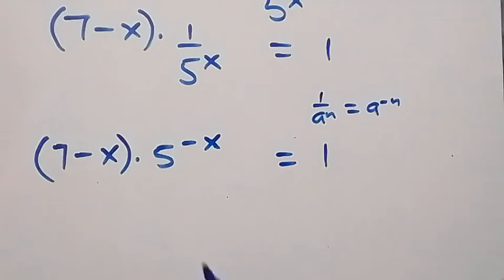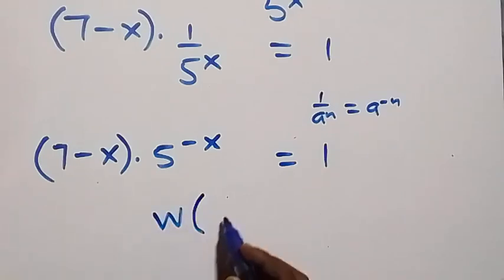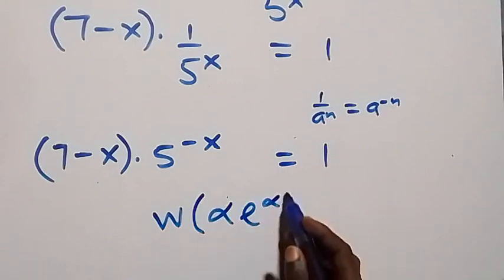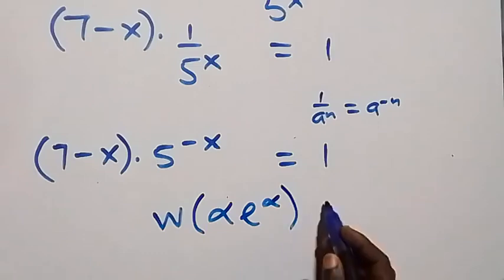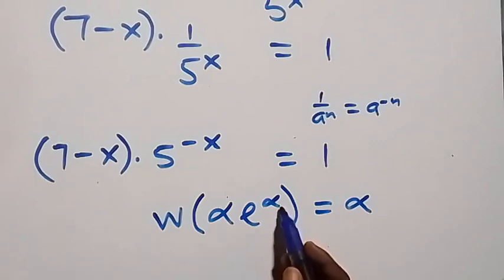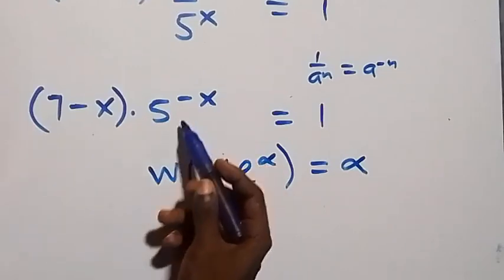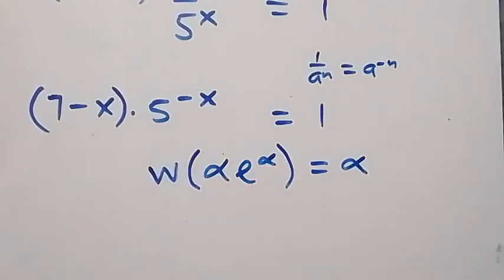We want to use the Lambert W function. The W function states that W(alpha × e^alpha) equals alpha. Now the power and the coefficients must be the same. From here, let's make the power of 5 equal to (7 minus X).